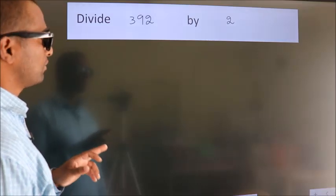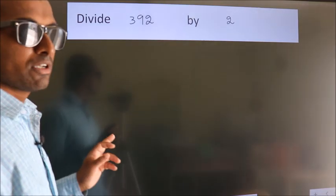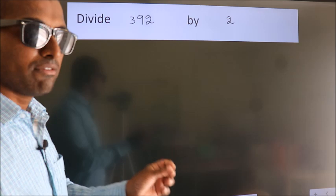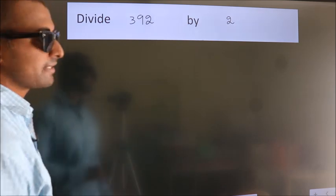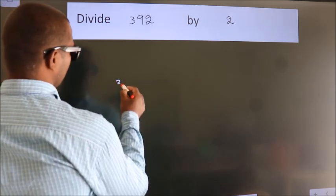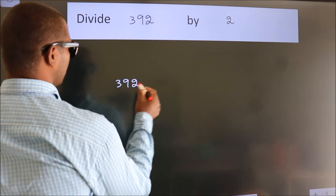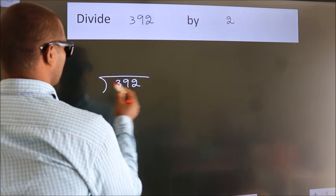Divide 392 by 2. To do this division, we should frame it in this way. 392 here, 2 here.